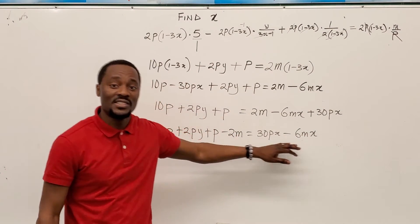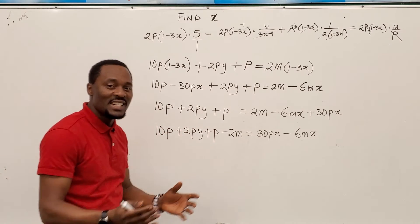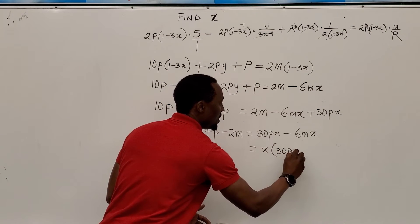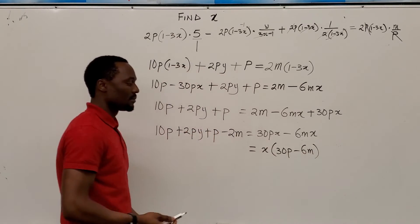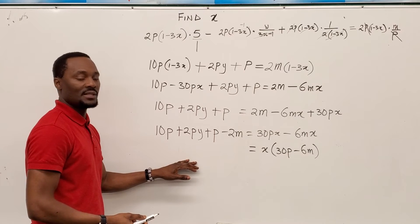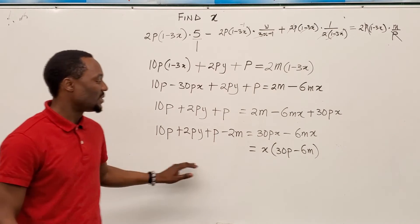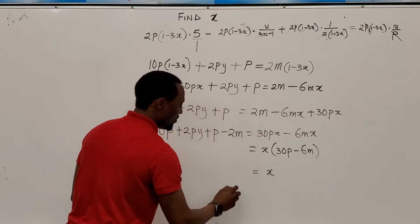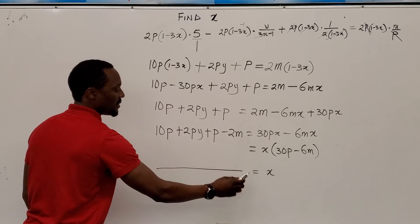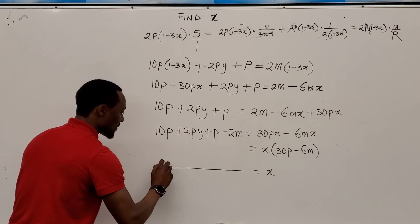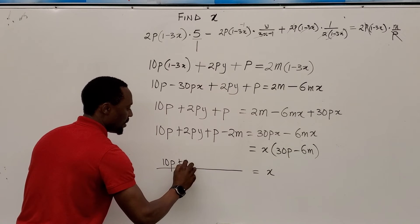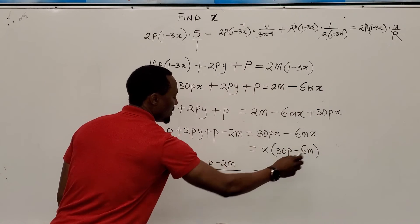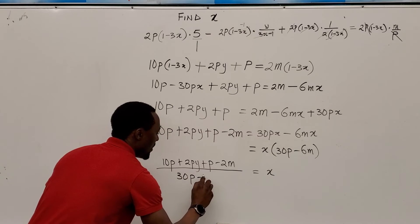Since all the x's are on the same side, isolate. Factor the x. That's going to be x into 30p minus 6m. And on this side, you still have this. So the next thing to do is to divide both sides by 30p minus 6m, which will leave you with your x being all of this divided by this. So you have 10p plus 2py plus p minus 2m all divided by 30p minus 6m.